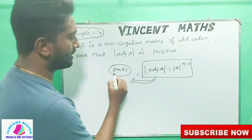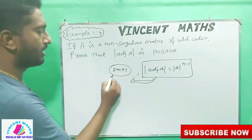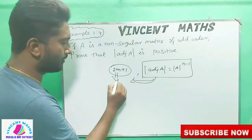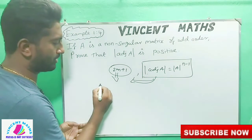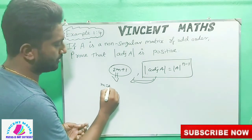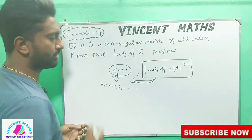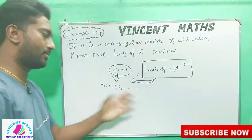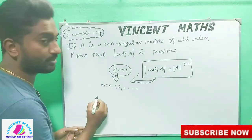What do we do here? Two m plus one. Now I will substitute. Now if we substitute, m is equal to 0. You can substitute.